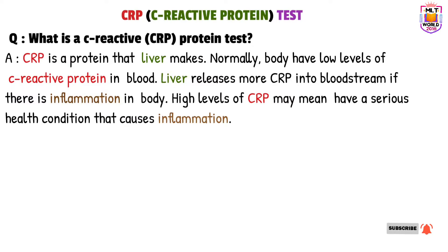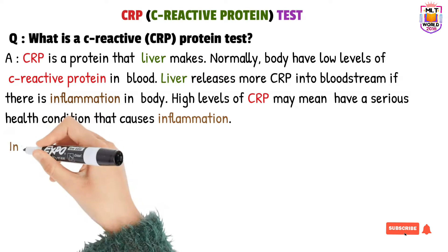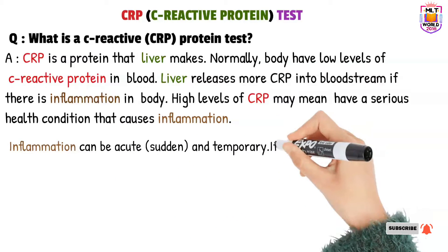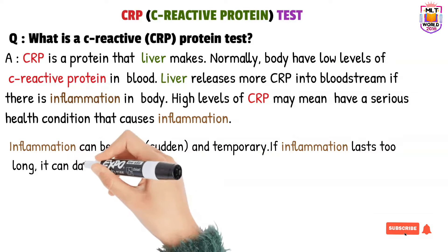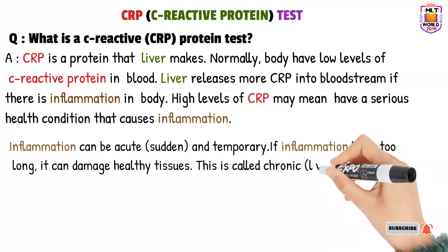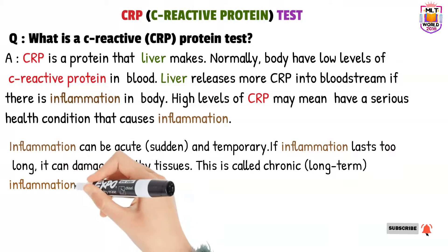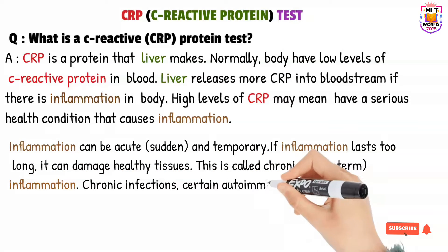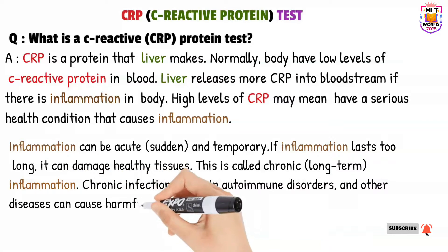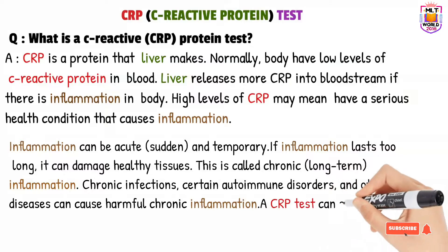Inflammation in the body is a way of protecting tissues and helping the body heal from injury or disease. Inflammation can be acute or temporary — this type is helpful. But if it becomes prolonged, that can be a sign of chronic infection and autoimmune disorders. Chronic inflammation caused by autoimmune disorders and other diseases can be harmful.